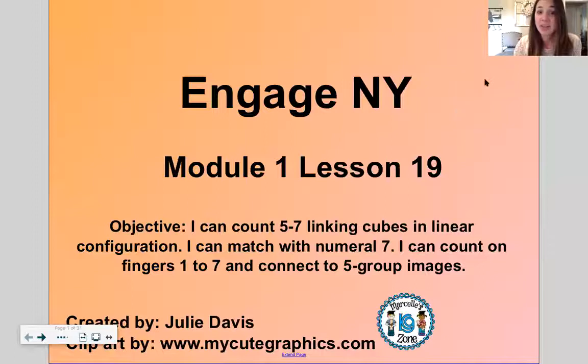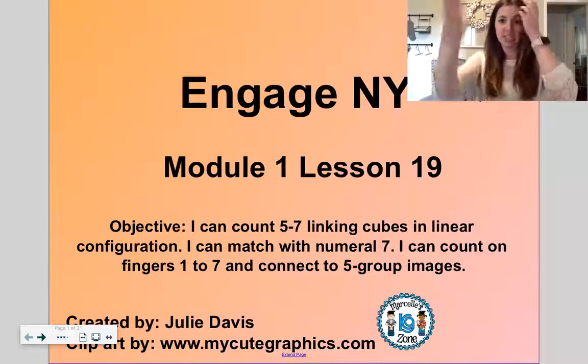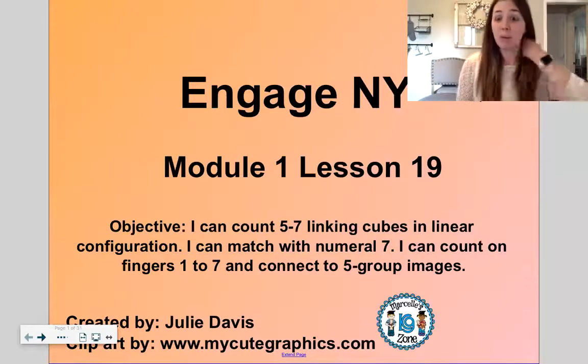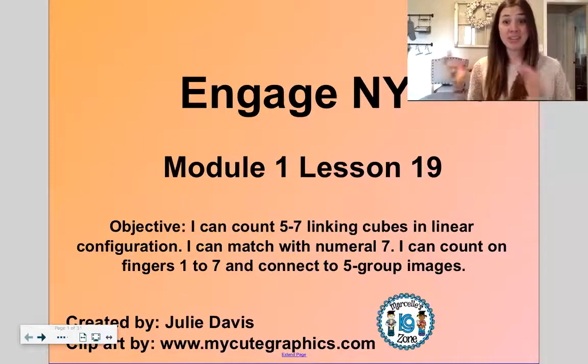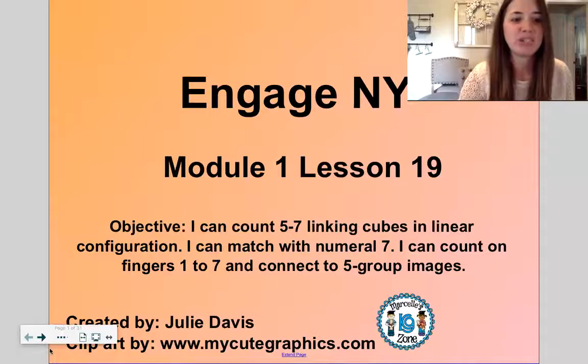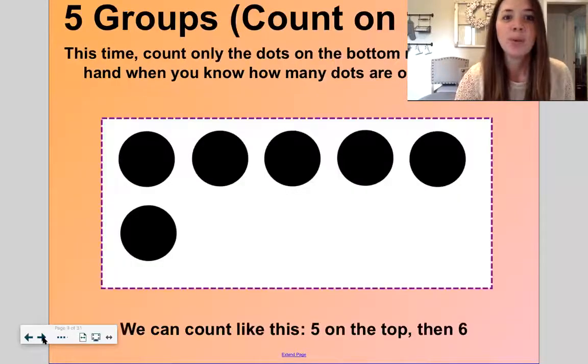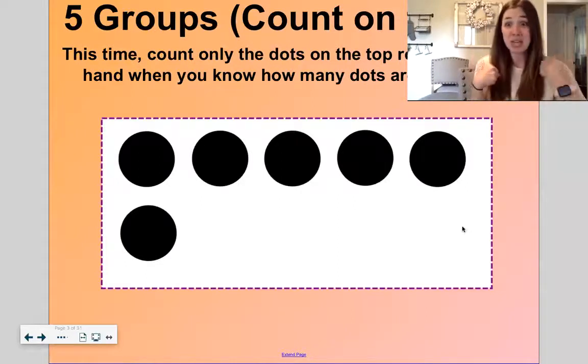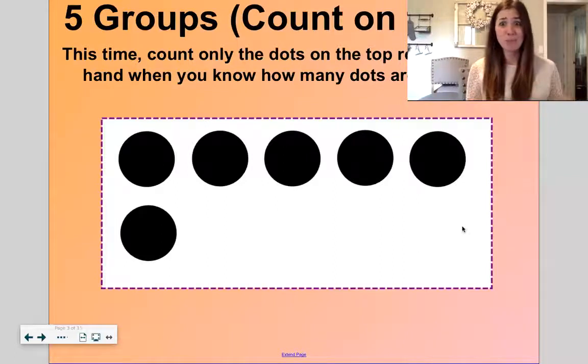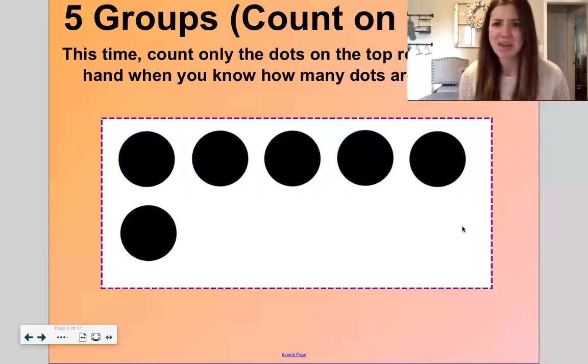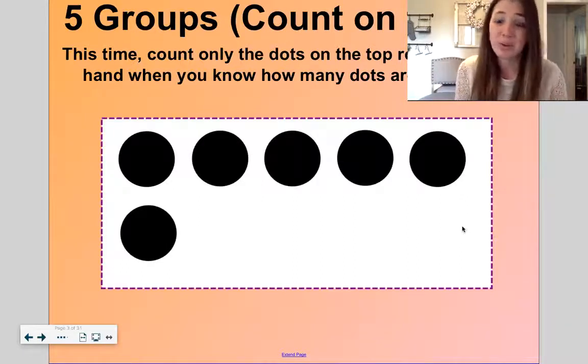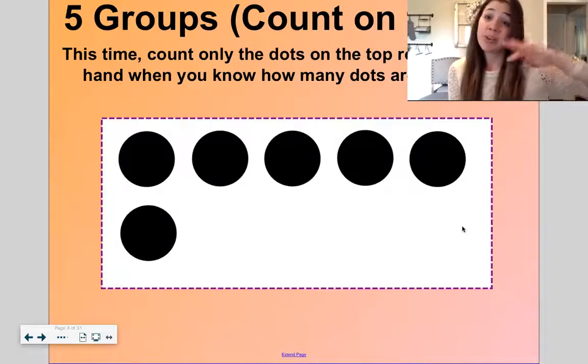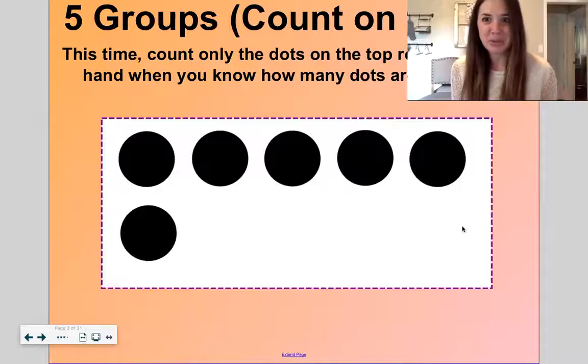Today we will count five to seven linking cubes in a linear configuration. That just means in a line. And we'll match them with the number seven, and we'll count one to seven and connect out to five group images. We've been working on numbers one through five, and I would say we've mastered these now. We're gonna level up and count groups of six today and even some groups of seven.